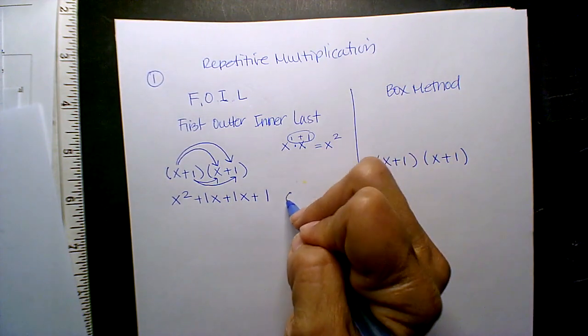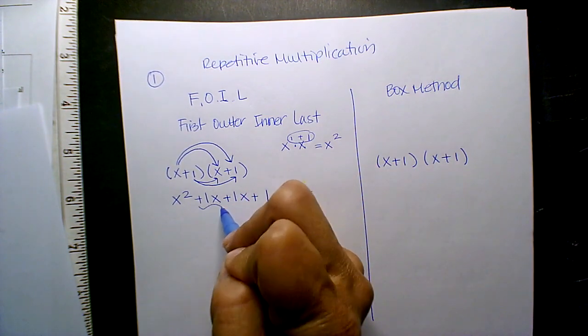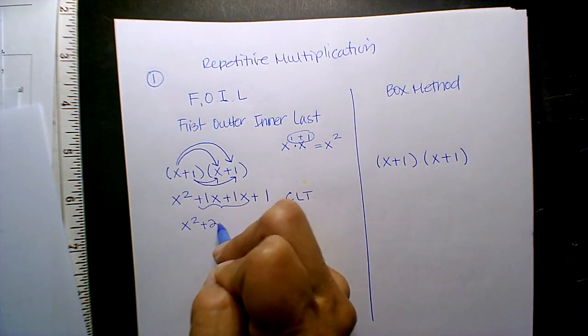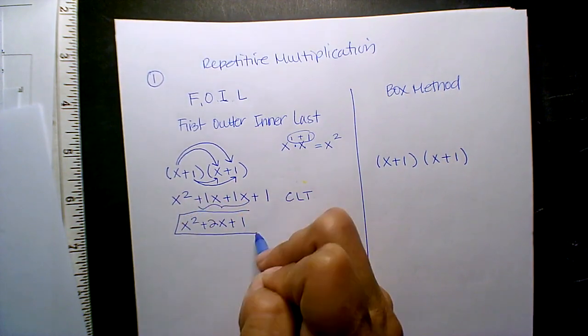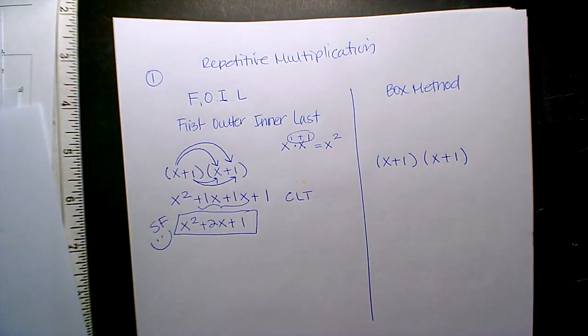And so now you're going to combine like terms. And so what's 1x plus 1x? 2x, yeah, someone said it. Plus 1, and that is your beautiful standard form answer. It's perfect.